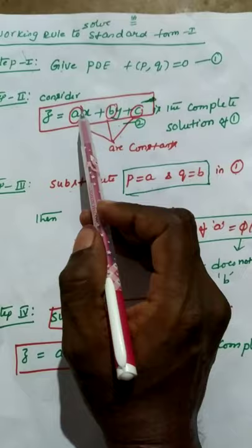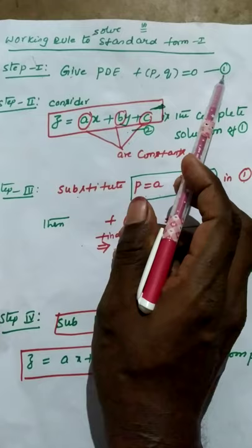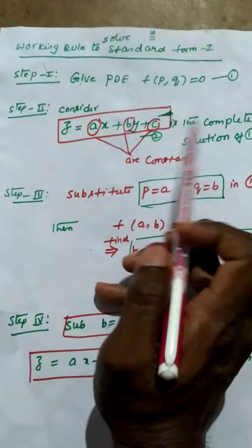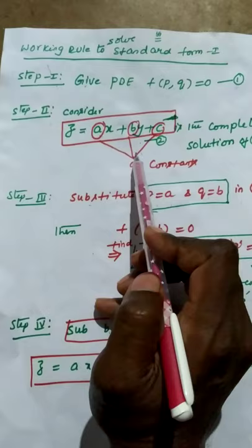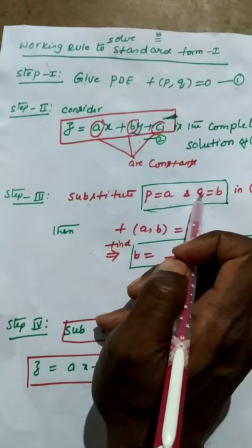In this working rule, we consider the given PDE f(p, q) = 0 as equation 1. In step 2, we consider z = ax + by + c as the complete solution of equation 1, where a, b, c are constants. In step 3, we substitute p = a and q = b in equation 1.